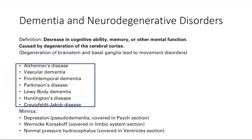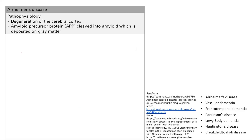There are also a couple of mimics that can present with symptoms of dementia: depression, Wernicke-Korsakoff, and normal pressure hydrocephalus. These three I'm going to talk about in other sections. Now let's focus in on Alzheimer's.